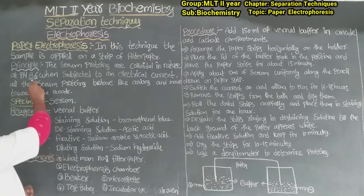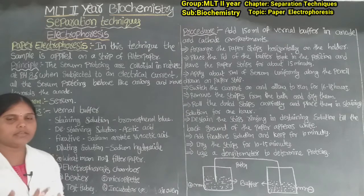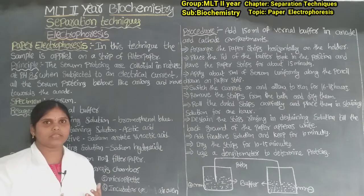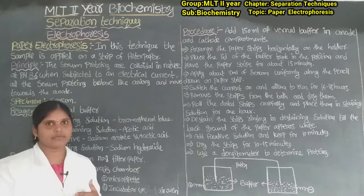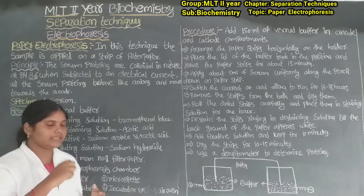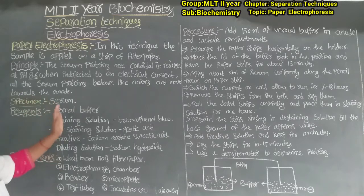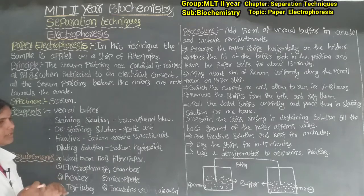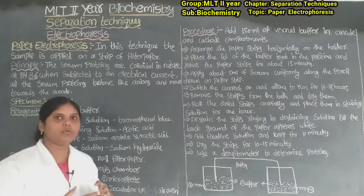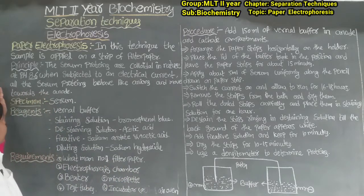The serum proteins are colloidal in nature. At pH 8.6, when subjected to an electrical current, all the serum proteins behave like anions and move towards the anode. So the serum proteins, being anions, move from the cathode side towards the anode. That is the principle of serum protein electrophoresis.